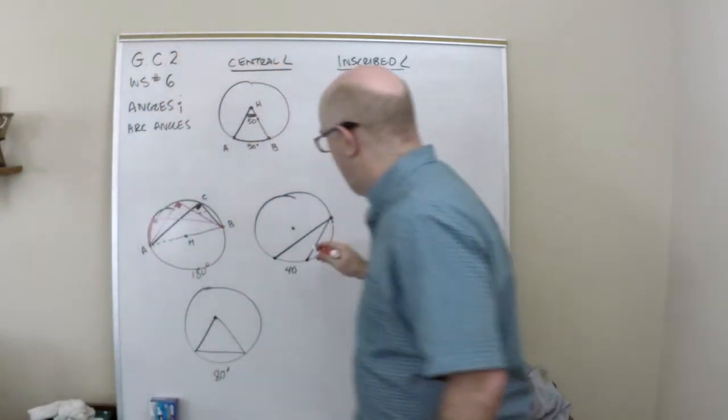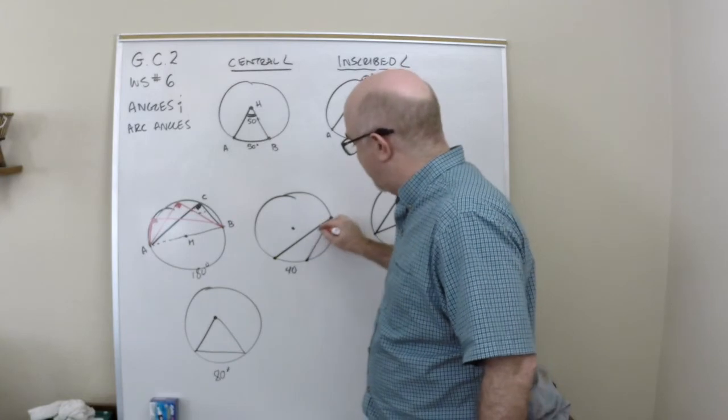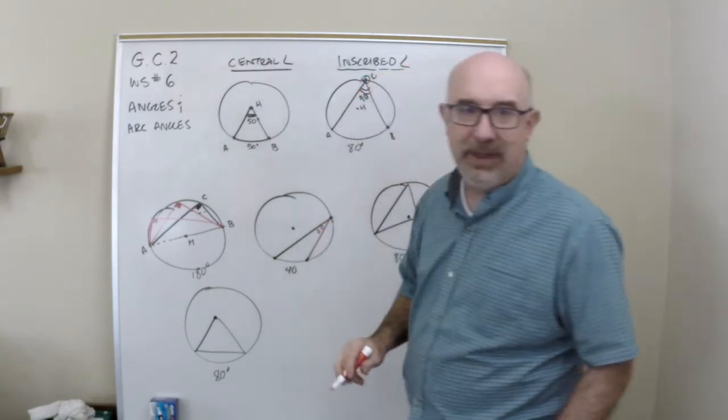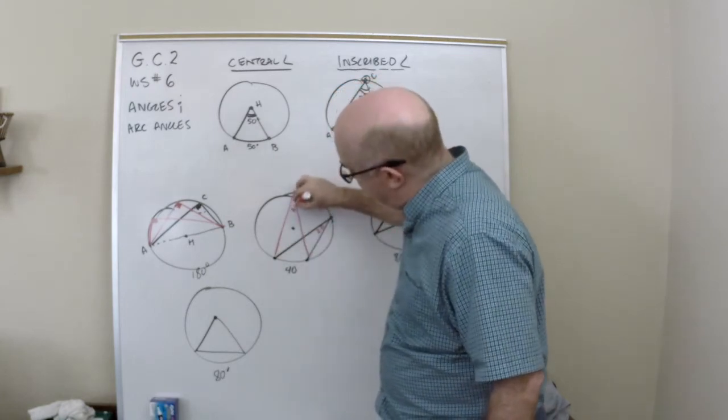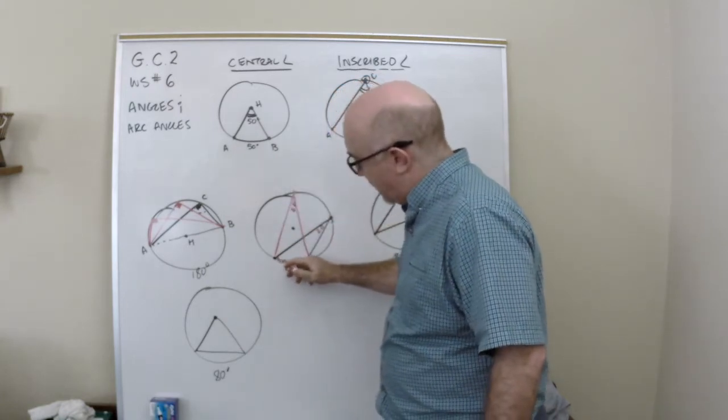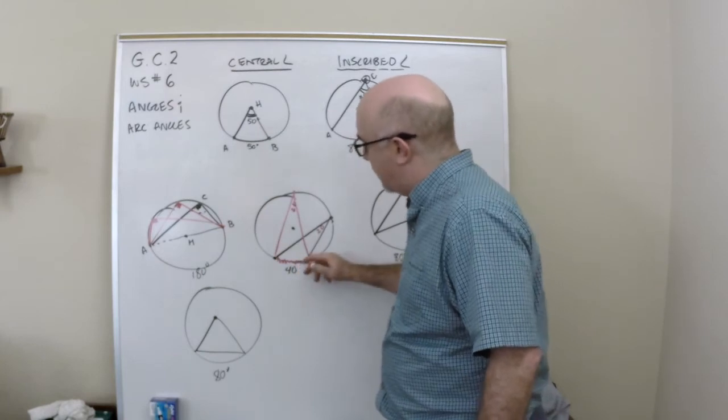Another cool thing to know is that this inscribed angle would be half of 20. That's not all that neat—we just talked about that. But any angle that you inscribe from those same two points, here's that arc of 40, would be 20.